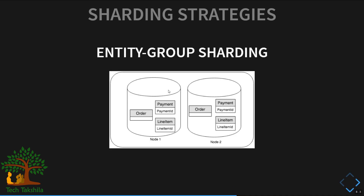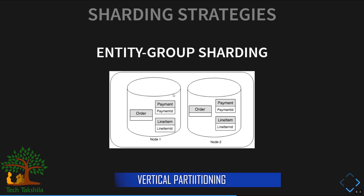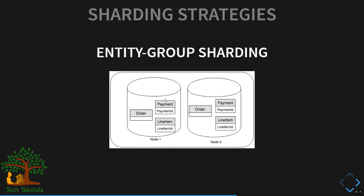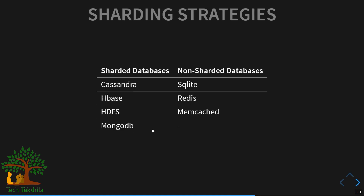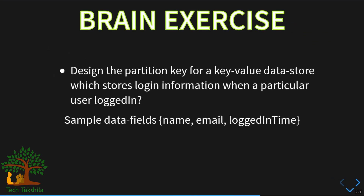The next strategy is entity group sharding. Partitioning comes in both horizontal and vertical flavors. For vertical partitioning in relational databases, you group related entities together on the same partition, creating clusters spread across different server nodes. Examples of sharded databases include Cassandra, HBase, HDFS, and MongoDB. Non-sharded databases include SQLite, Redis, and Memcached — though Memcached can be sharded using algorithmic sharding — as well as ZooKeeper.